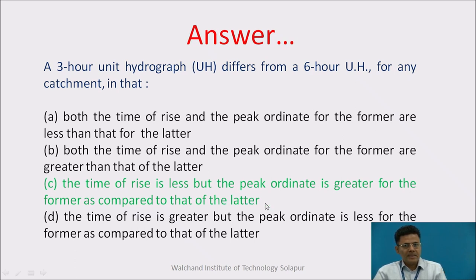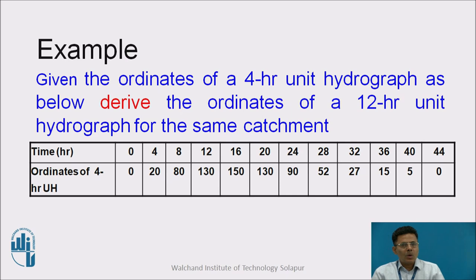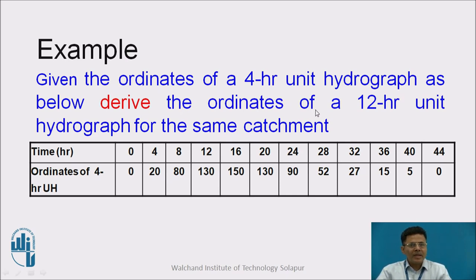This gives us the idea about how hydrographs of different duration differ. Now let us have an example: given the ordinates of a 4-hour unit hydrograph, derive the ordinates of a 12-hour unit hydrograph from the same catchment.